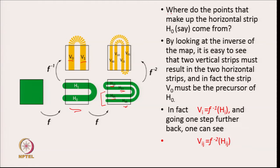The points making up horizontal strip h0 come from v0, because when this is stretched into a longer rectangle and flipped, all points from v0 go straight into h0. Likewise all points from v1 go into h1. We can write that v sub i equals f-inverse of h sub i, and going back another step, v_ij equals the map twice backwards on h_ij.